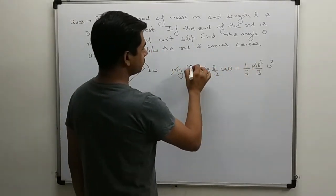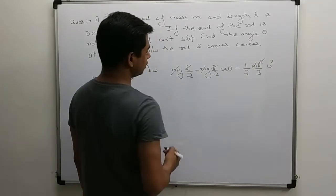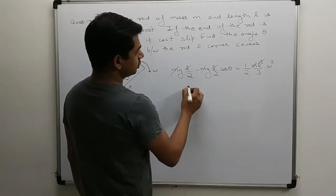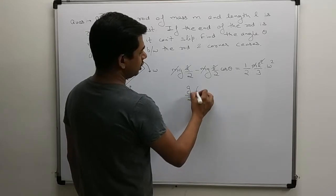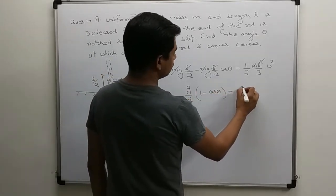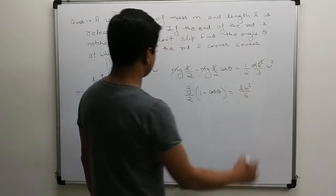M can be canceled. L can also be canceled. So we get g by 2 common. g by 2 into 1 minus cos theta is equal to L omega square by 6. This is our equation.